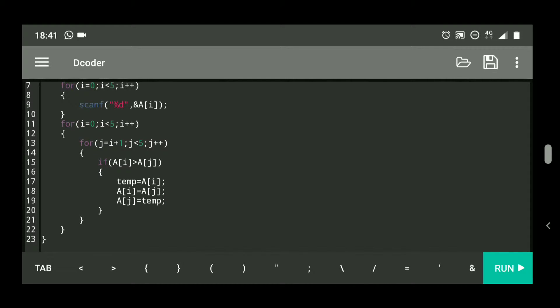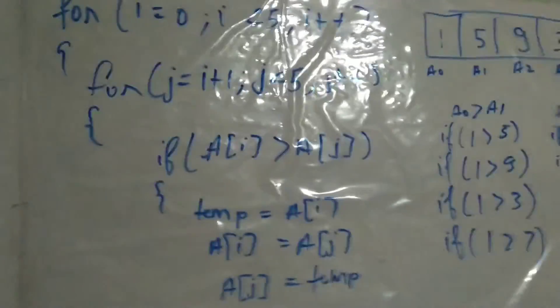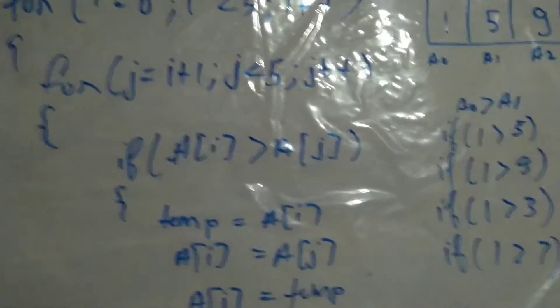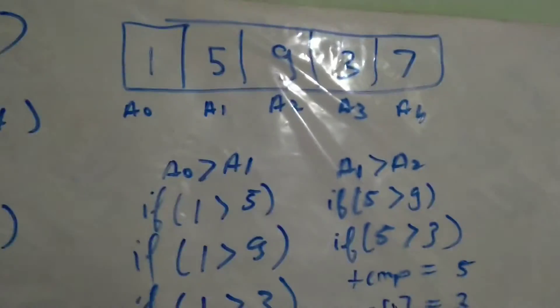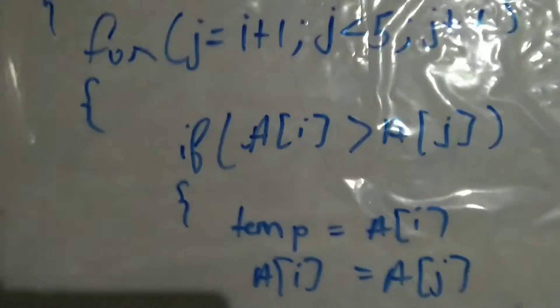So this is the selection sort algorithm — this is the logic for how we swap in ascending order. I have taken an example with five numbers in the array: one, five, nine, three, and seven. As per this logic, the j loop will keep running continuously, checking if a of zero is greater than a of one.